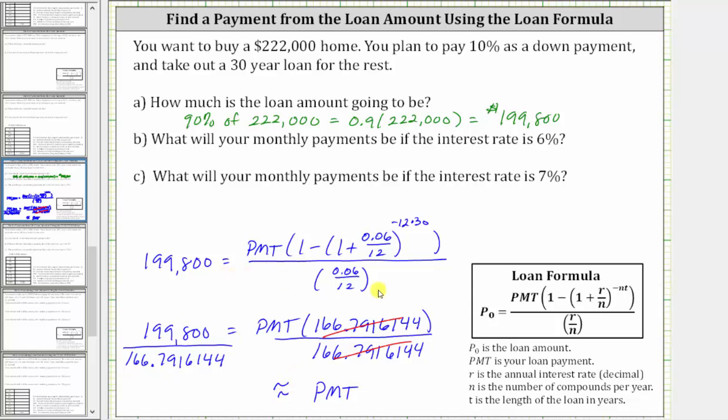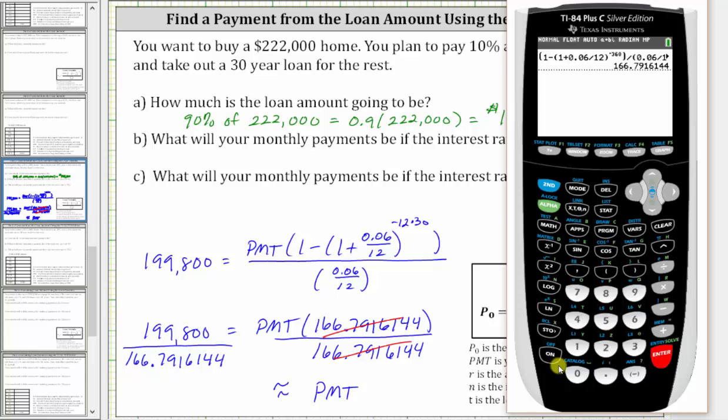So going back to the calculator, here we have 199,800 divided by 166.7916144, enter. To the nearest cent, if the interest rate is 6%, then the monthly payment will be $1,197.90.